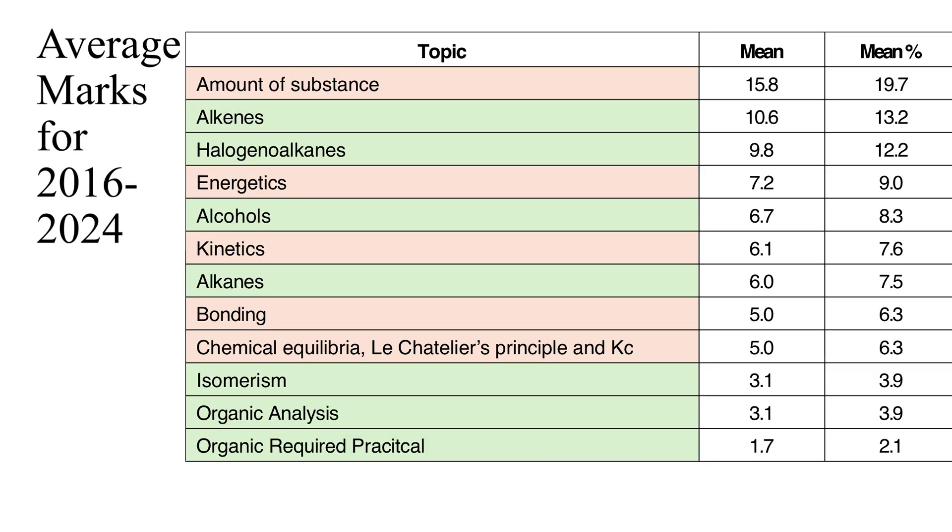When we look at the average number of marks that have been available for each of these topics across all of the papers that there have been you can see that one topic stands out. Amount of Substance has been worth on average nearly 16 marks out of 80 per paper. That's nearly 20% of the marks available.